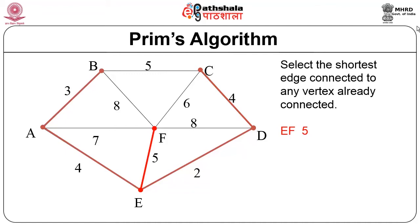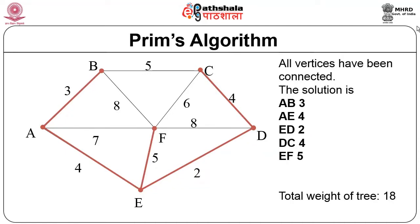Now all the nodes have been done. You have A-B: 3, A-E: 4, E-D: 2, D-C: 4, and E-F: 5, and the total weight is 18. These are the nodes selected and this is the way it is done. This is completely different from the previous approach where we consider only edges by weight. Here we always start from nodes already present in the tree and try to connect a new node based on the minimum value — that is the way the Prim's algorithm works.